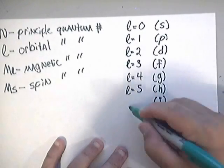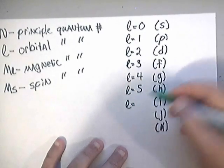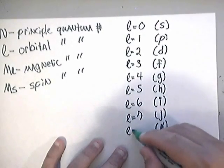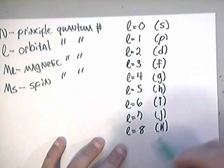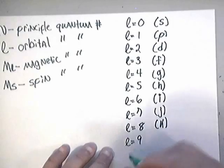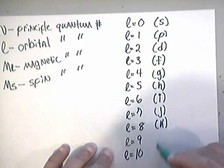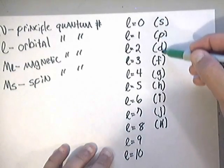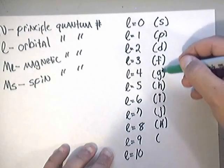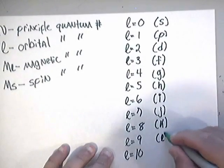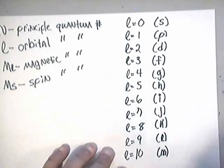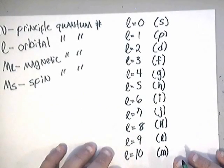So, you have L equals 6, L equals 7, L equals 8, L equals 9. I'm going to stop at 10 because this is getting crazy. And L equals 10. So that's J. So that's S, P, D, F, G, H, I, J, K, L, and then M. There's the first 10 orbital quantum numbers.